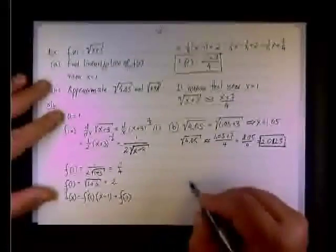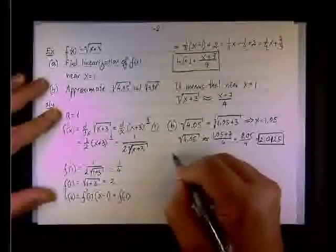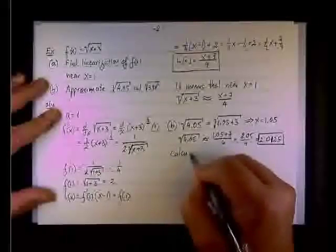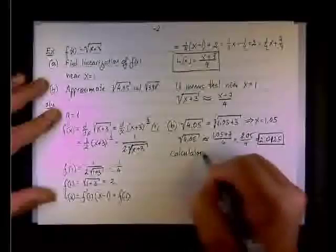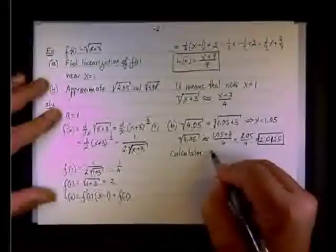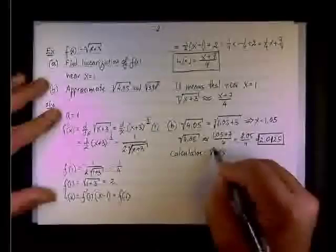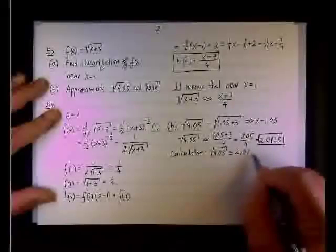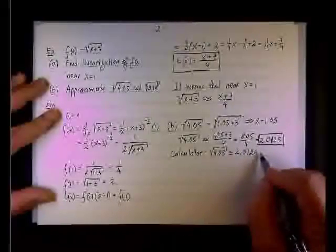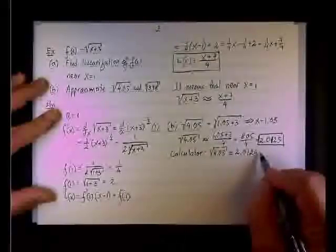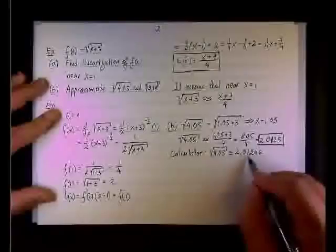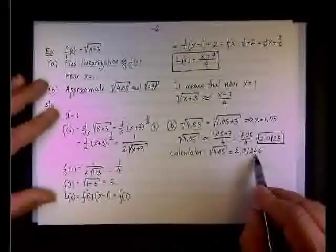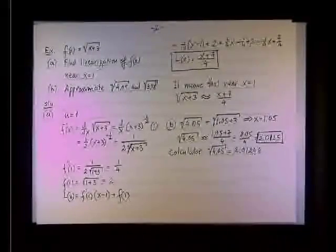Now, you want to compare it with the calculation. If you put in the calculator, what do you get? Go ahead and put in the calculator. Tell me what you have. 2.0124. What after that? 2.01246. Let's stop right there. So we are off only at the fourth decimal.